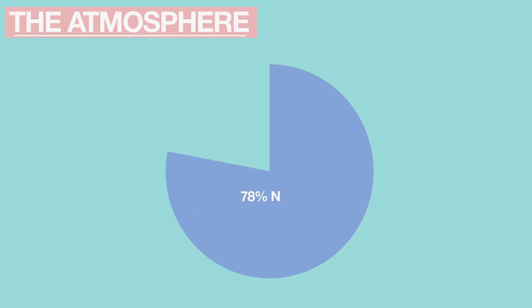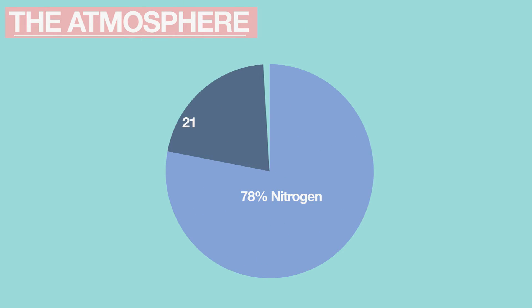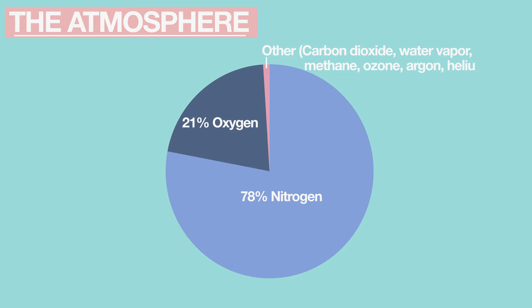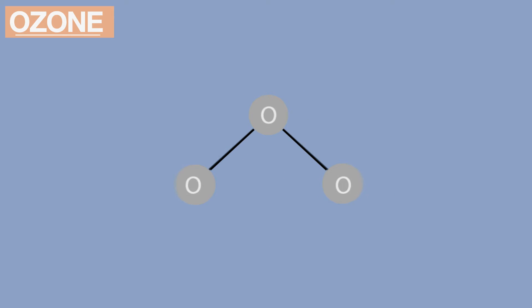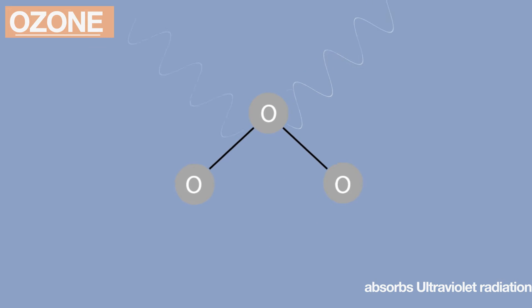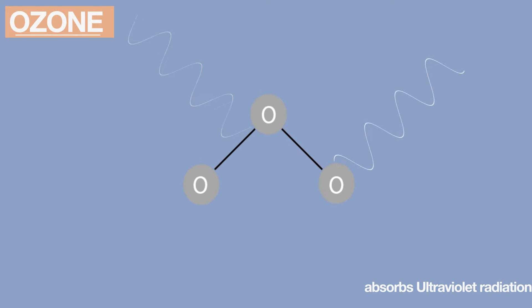Most of the gases that make up the atmosphere of the Earth are transparent to the incoming solar radiation, and allow it to travel all the way to the surface of the Earth. One major exception is ozone, which absorbs the ultraviolet or UV portion of the solar radiation, and keeps us protected from this harmful and damaging type of radiation.